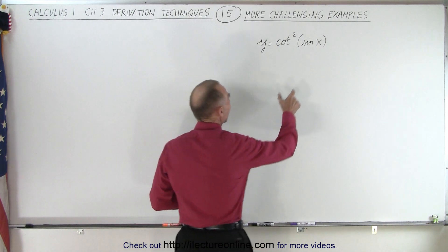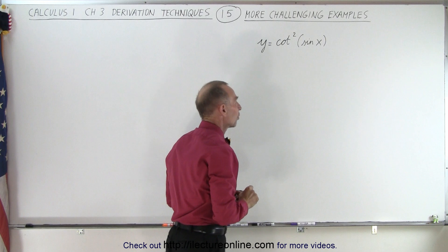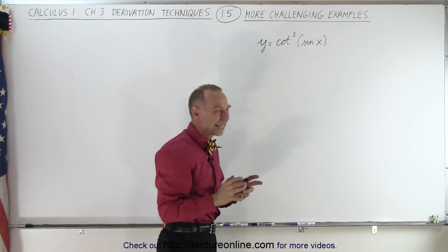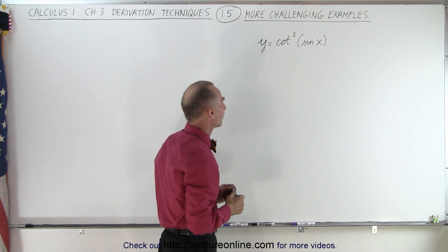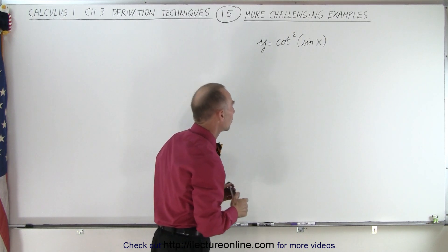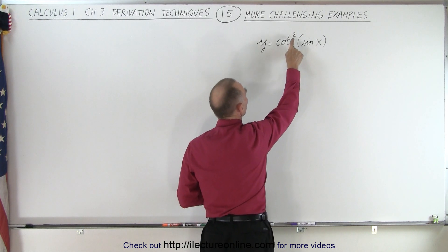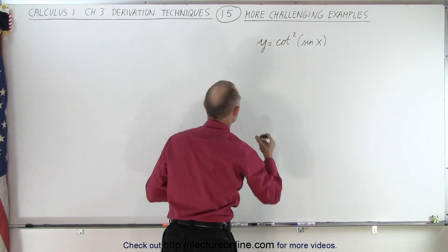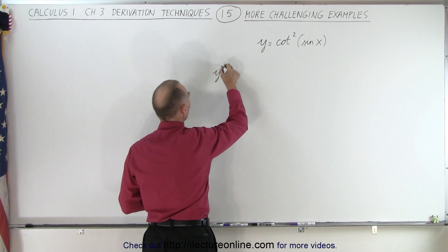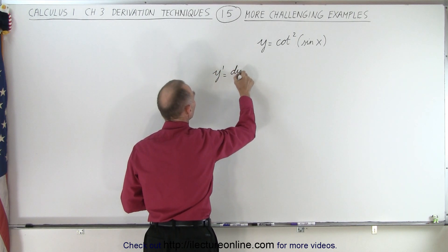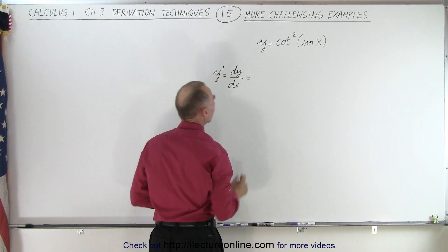Notice that the sine of x is the argument of the cotangent function, so it's not a product — we don't use the product rule. We have to be careful. We do need to use the exponential rule because we have the cotangent squared. So we're going to take y prime, which is dy/dx, and that equals: